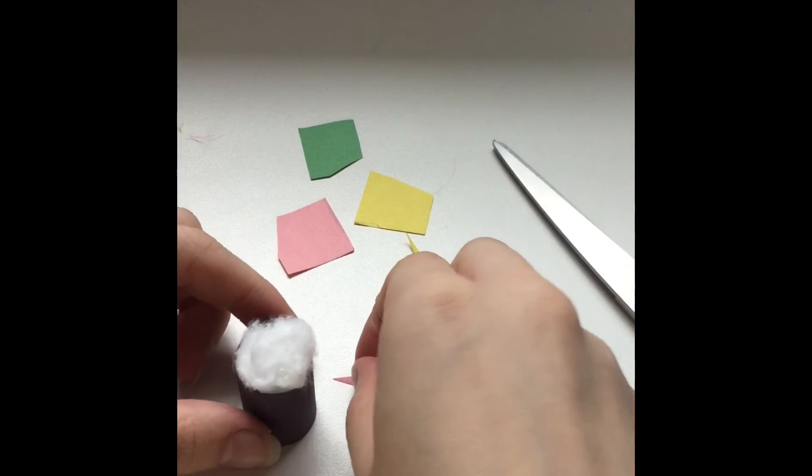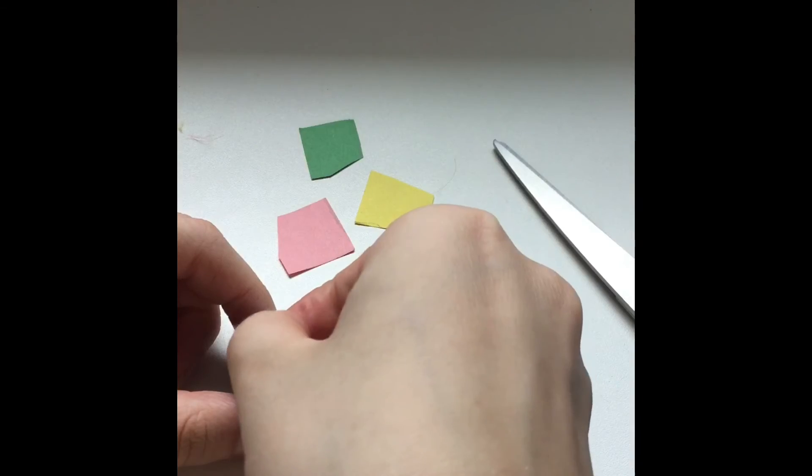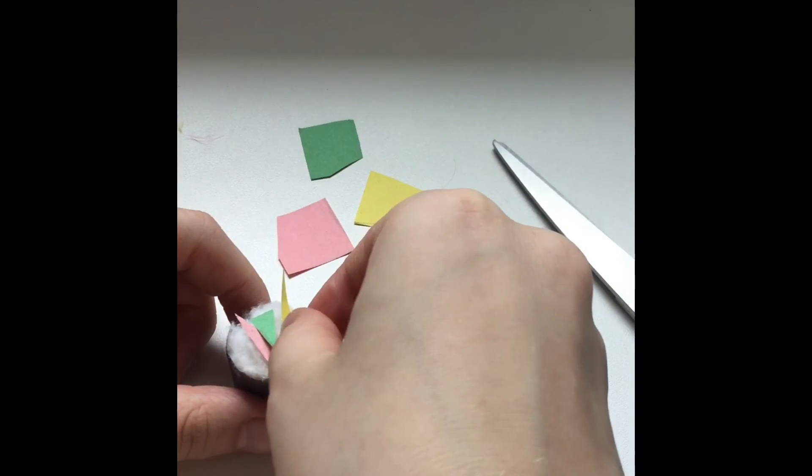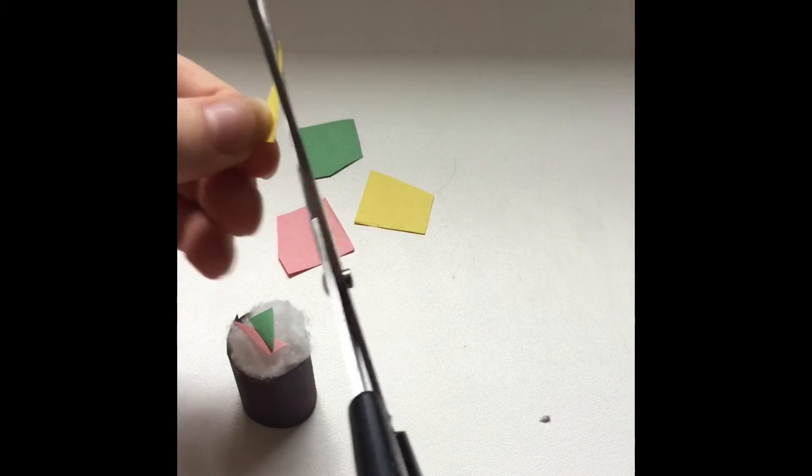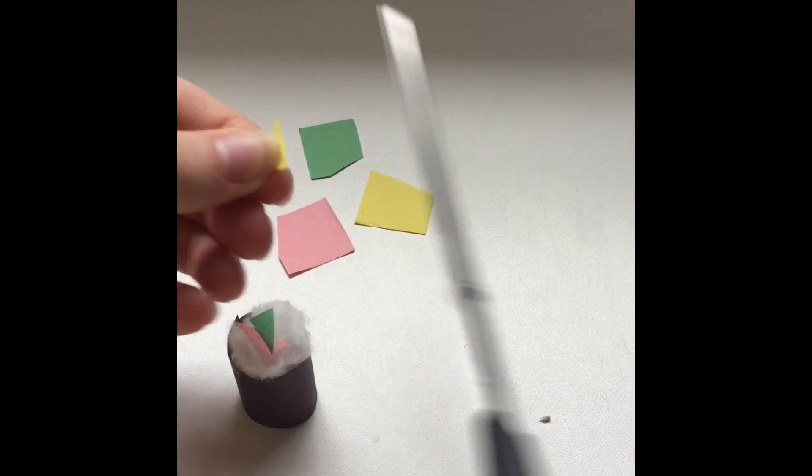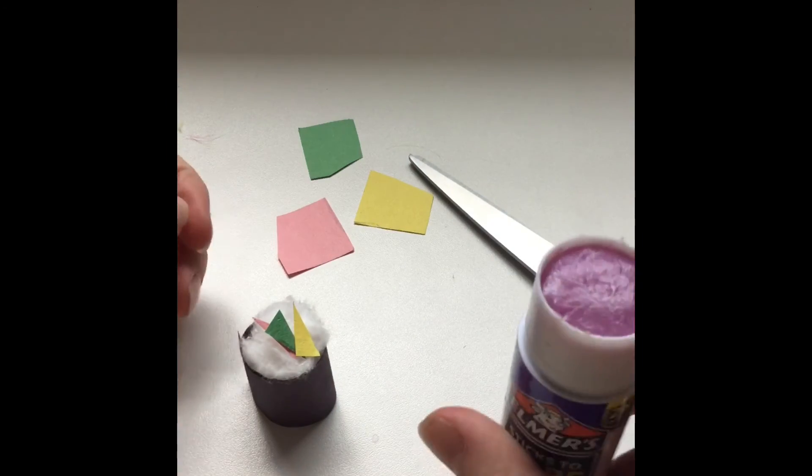So once your three little triangles are cut out, you can place them on top. Oh, this one's a little big. Let me cut it. Place them on top, take your glue, and glue them on.